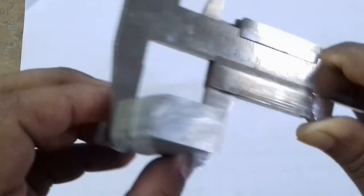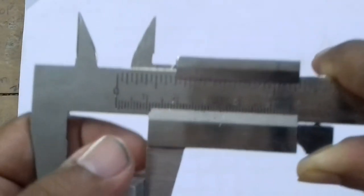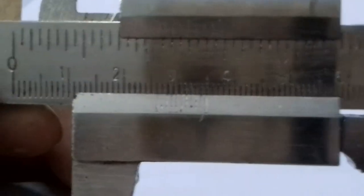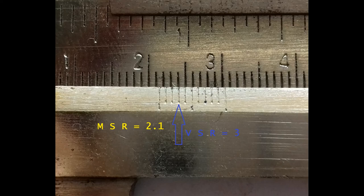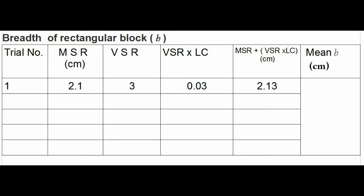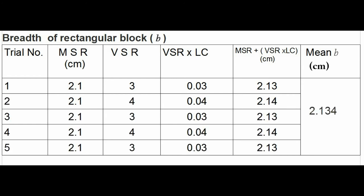Now we take the breadth reading. For that, place the breadth part of the rectangular block between the outside caliper jaws. Can you read MSR and VSR? Yes, MSR is 2.1 and VSR is 3. We will write it on the tabular column and get the breadth as 2.13 cm. We repeat this measurement 4 more times and find average breadth.